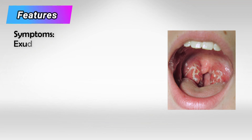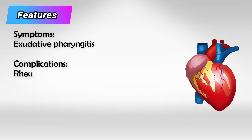Other features include pharyngitis with exudate, mainly on the tonsils, and fever. If untreated quickly, this will result in rheumatic fever.